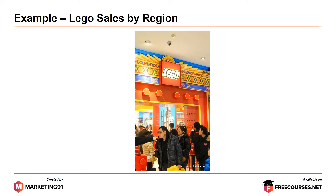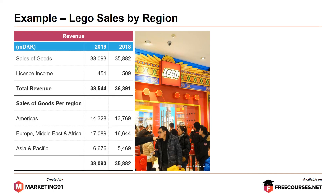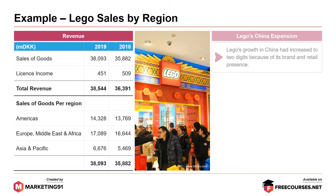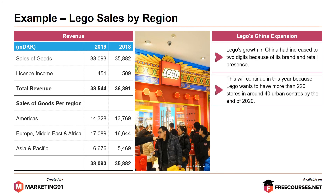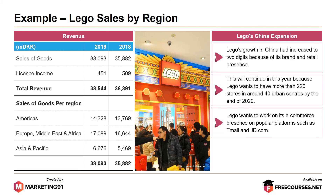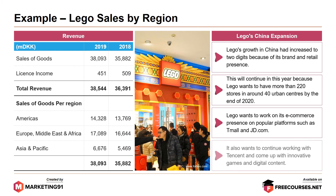The next and final example is Lego sales by region. Lego witnessed an increase in their sales from 2018 to 2019, roughly about $3 billion Danish Kron. As far as sales of goods per region is concerned, the maximum sales can be attributed to the EMEA region — Europe, Middle East and Africa — which was about $17.08 billion Danish Kron. America also witnessed an increase from $13.7 billion to $14.3 billion Danish Kron. Moving on to Lego's China expansion: Lego's growth in China has increased to two digits because of its brand and retail presence. This will continue as Lego wants to have more than 220 stores in around 40 urban centers by the end of 2020. Lego also wants to work on its e-commerce presence on popular platforms such as Tmall and JD.com, and to continue working with Tencent to come up with innovative games and digital content.